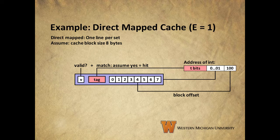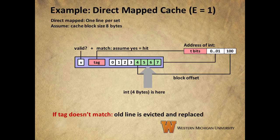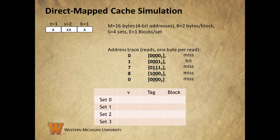Once we know that we have a hit we check the block offset. We're dealing with an 8-byte block size, so we require three bits to uniquely identify each byte in the block — that is why the block offset contains three bits. In this case we are looking for byte 4, so that is the byte in the block where our integer starts. We always assume a 32-bit word size in these examples, so the int we need will be contained in four bytes starting at byte 4 in the data block. Now we had a hit because the valid bit was set and the tag bits matched. If they didn't match we would have a miss and that line would have to be evicted and replaced.